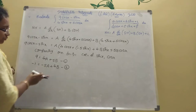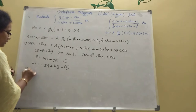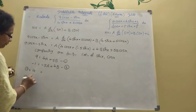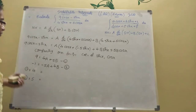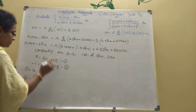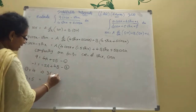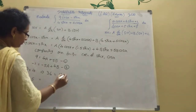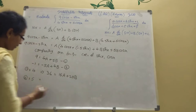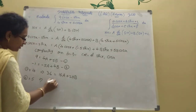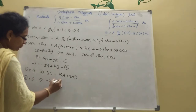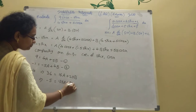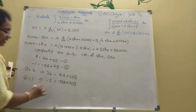To eliminate B, multiply equation one by 4 and equation two by 5. From equation one times 4: 36 equals 16A plus 20B. From equation two times 5: minus 5 equals minus 25A plus 20B. Both have 20B, so we subtract.